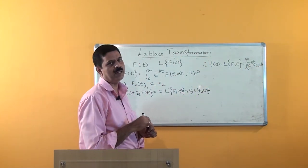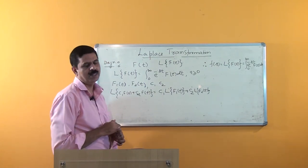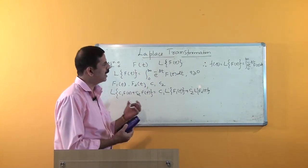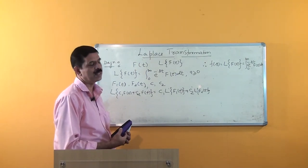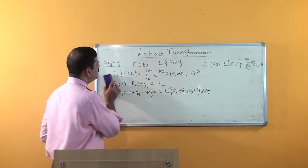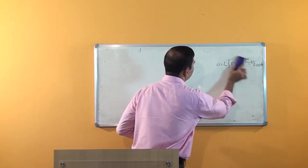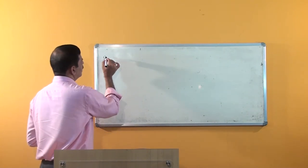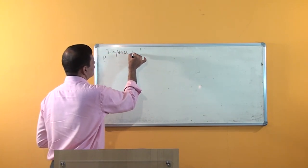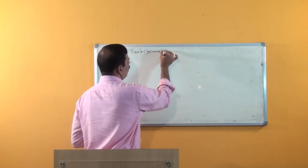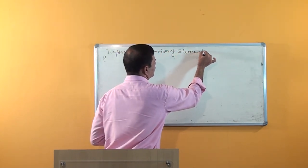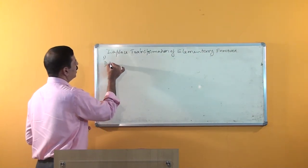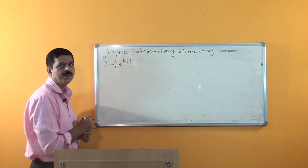This is the definition of Laplace transform. Just as in differentiation or the D operator you collected formulas for standard trigonometric and exponential functions, in the same manner we will use this definition to collect formulas. We will now apply the L operator on the exponential function — this is the first formula — and we will find the Laplace transformation of some elementary functions. We will first find Laplace of e to the power kt.